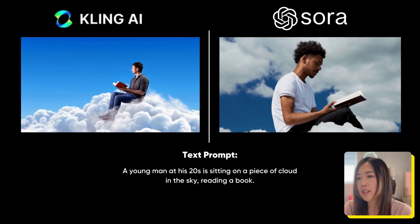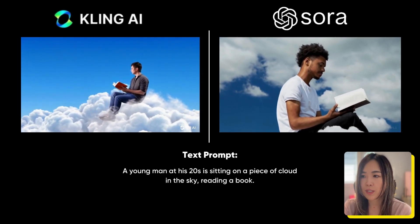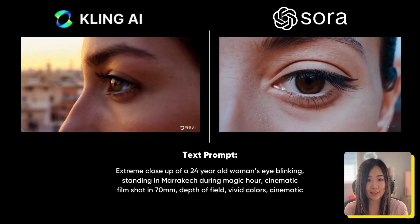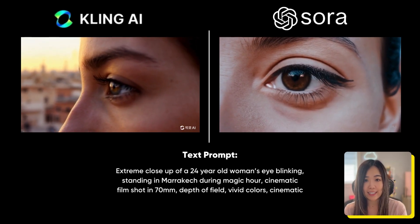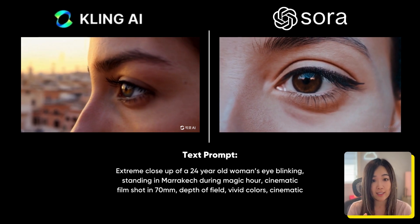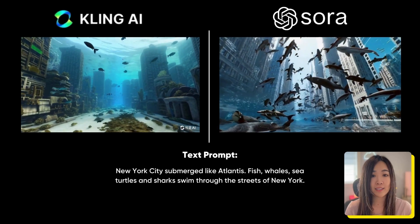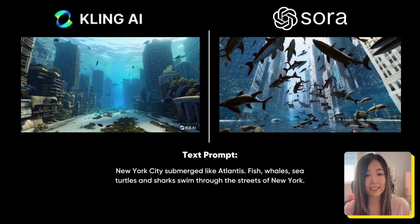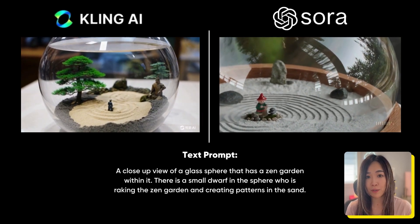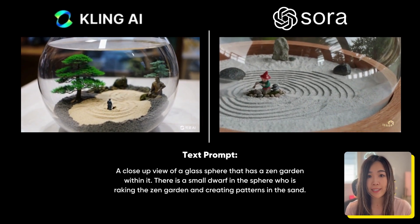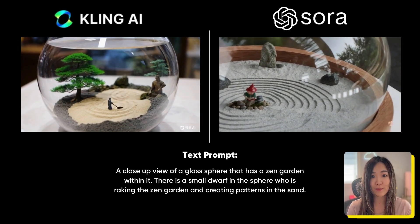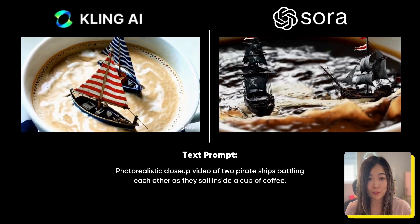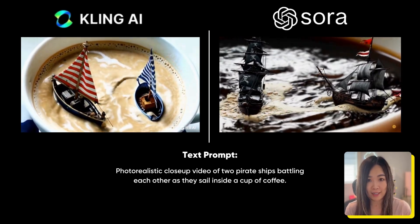Here are some text-to-video results where I used Sora's prompts to regenerate on Kling AI. One thing I noticed is that Kling's generation is not as aesthetic and cinematic as what Sora shows us. But keep in mind that both platforms likely cherry-pick the best video generations for their showcases, so when we generate at home using the same prompts, we may not get the same results.